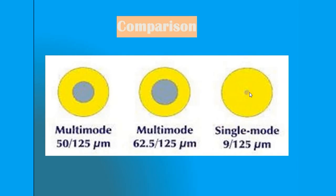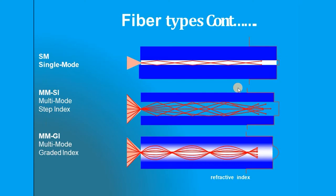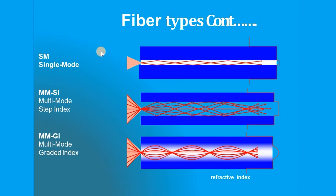Single mode fiber has a very small core diameter and a single ray path. In a step index fiber, the light ray path will be straight because the refractive index is uniform in the core region. You can see a single mode step index fiber has a straight-line path with a single ray. Multi-mode step index fiber also has straight ray paths, but many of them — zigzag paths due to multiple reflections.